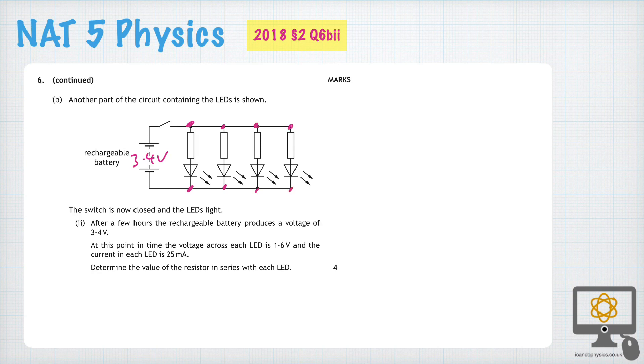Now the question is, there is a voltage across each LED. So we'll just do this bottom one, the back one of 1.6 volts. And the current that's flowing through that LED is not 0.25, it's 25 milliamps. And so the question is, what is the value of the resistor?